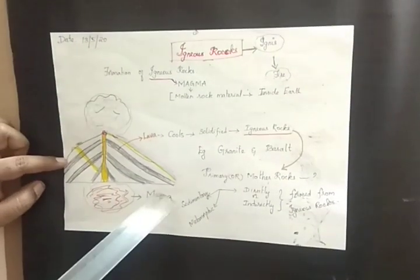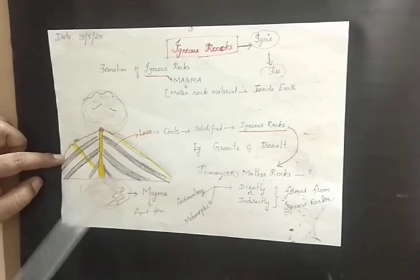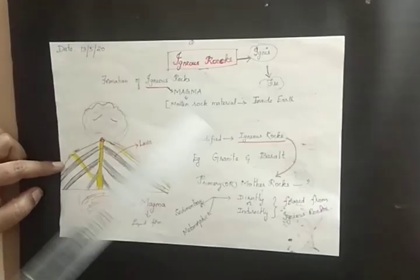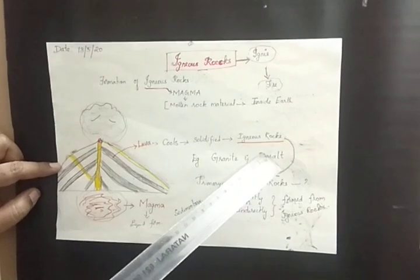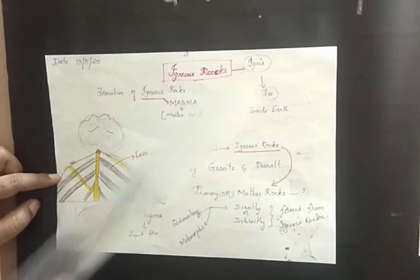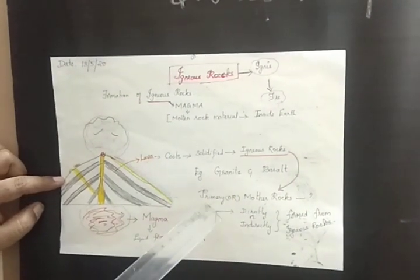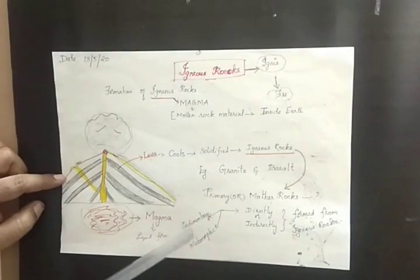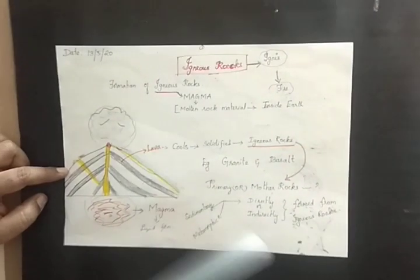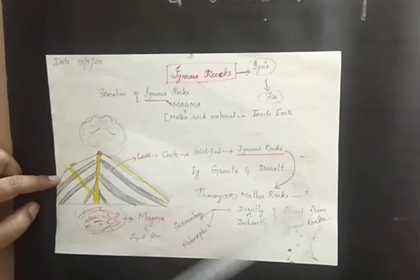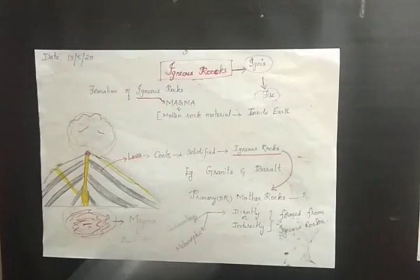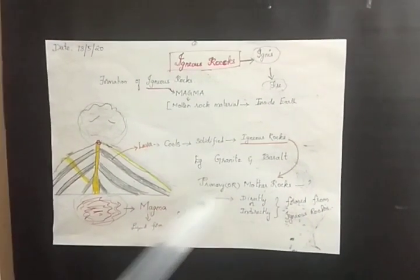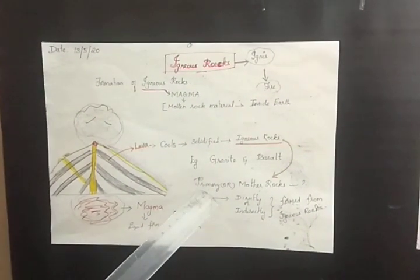Magma is the liquid form. When magma reaches the top layer of the earth it is termed as lava. When the lava cools and solidifies into rock, it is called igneous rock. These igneous rocks are often termed as primary or mother rocks, because the other rocks like sedimentary and metamorphic rocks are directly or indirectly formed from igneous rocks.